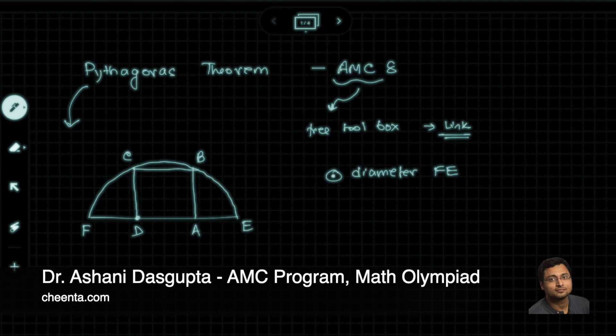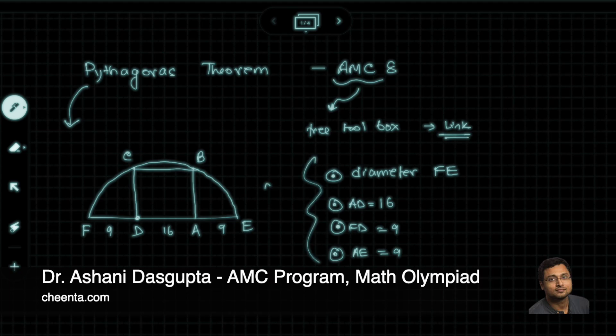Now it's given that AD is 16, FD is 9, and AE is 9. So this is 9 and this is 9. All of this is given data.